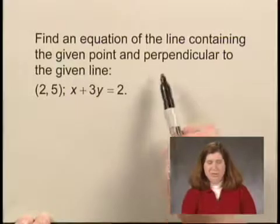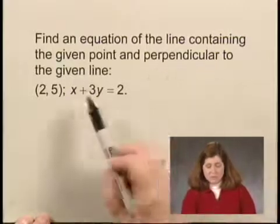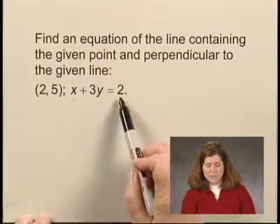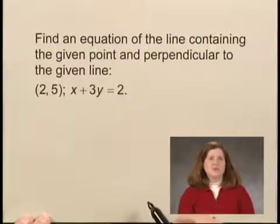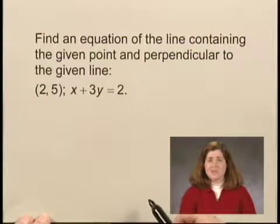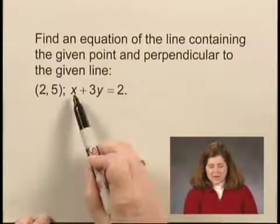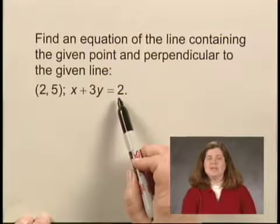Because we're told that the line we're looking for is perpendicular to x plus 3y equals 2, perpendicular lines have slopes whose product is negative 1. If I can find the slope of this line, I can calculate the slope of any line perpendicular to it.